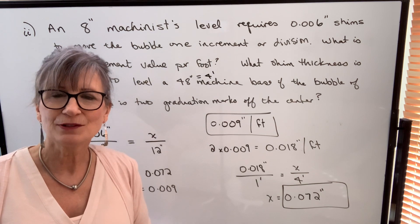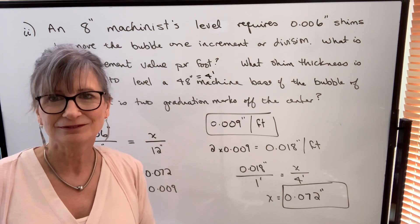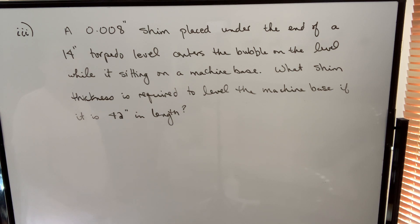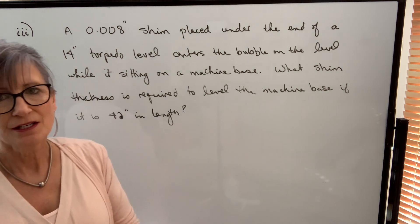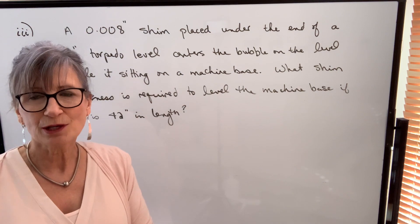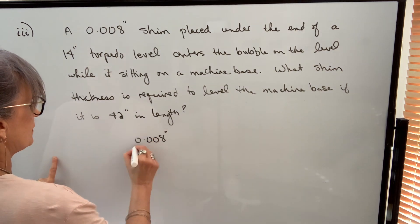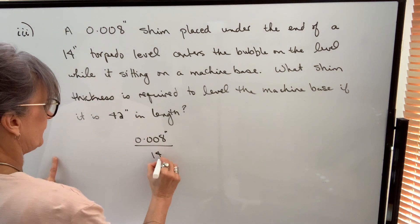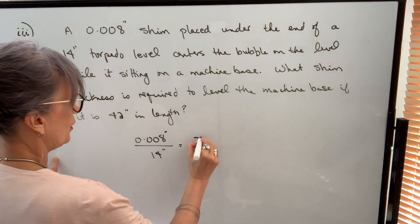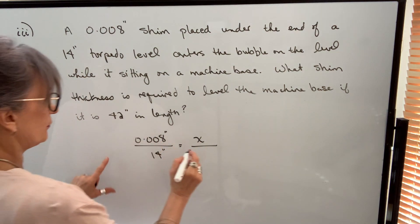Now let's take a look at doing an example with a torpedo or carpenter's level. In our last example, an 8 thousandths inch shim placed under the end of a 14 inch torpedo level centers the bubble on the level while it is sitting on a machine base. What shim thickness is required to level the machine base if it is 42 inches in length? So in this example, it's again a direct proportion. We know it's out 0.008 inches over the length of the level, which is 14 inches. We want to know how much it will be out over the length of the machine base, which is 42 inches.